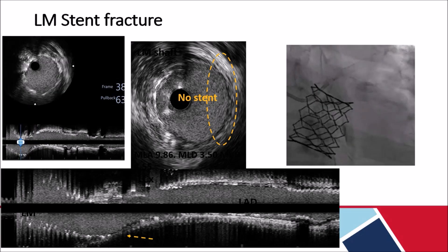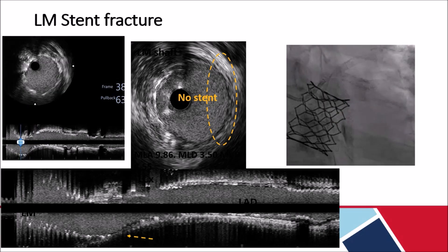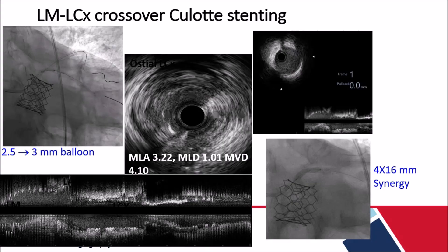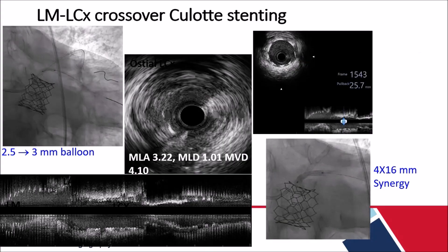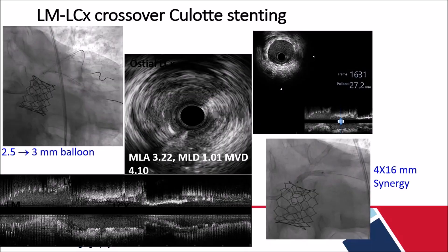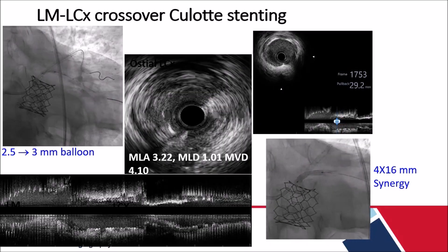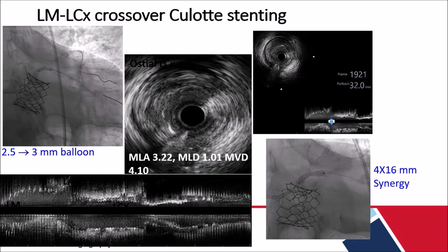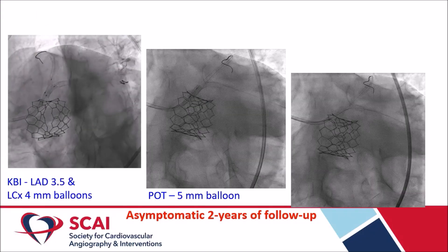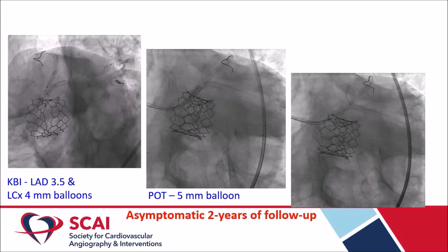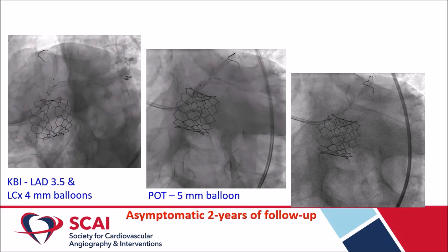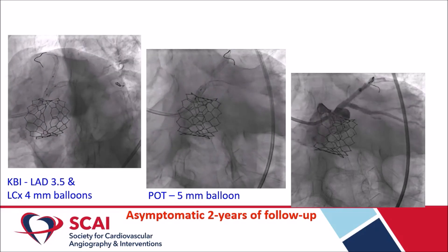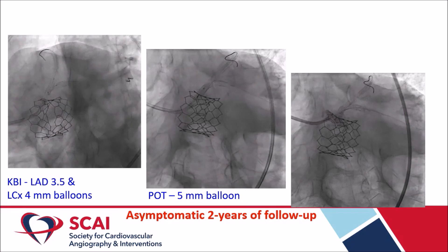IVUS catheter could not cross the LCX due to the tight and angulated view. The LCX was dilated with a 2.5 to 3 mm balloon, followed by a 4×16 mm Synergy stent from the left main to the LCX. A 7F guide was used. Kissing balloon was performed with 3.5 mm across the LAD and 4 mm across the LCX, with POT using a 5 mm balloon, achieving a good result.